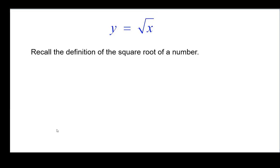Let's start with the definition of the square root of a number. Remember, for example, the square root of 36 is 6 because when you square 6, you get 36.